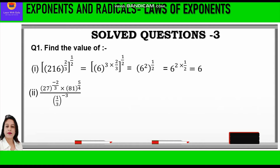The second part is 27 raised to power minus 2 by 3, into 81 raised to power 5 by 4, upon 1 by 3 raised to power minus 3. Now 27 is 3 cube, so we write 3 cube raised to power minus 2 by 3. And 81 is 3 raised to power 4, so we write 3 raised to power 4, further raised to power 5 by 4. In the denominator, the negative exponent is made positive by reciprocating the base, so 1 by 3 raised to power minus 3 becomes 3 cube.